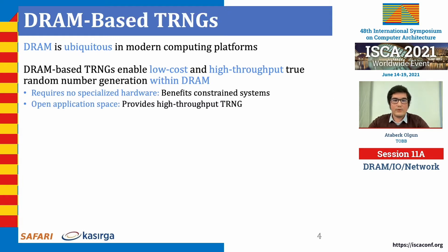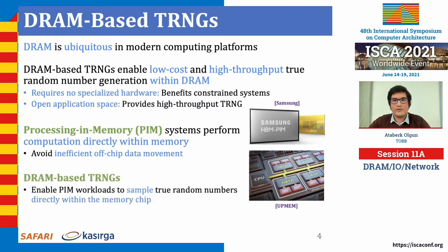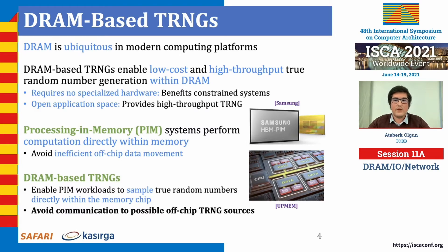These TRNGs open application space in systems that require high-throughput true random number generation. DRAM-based TRNGs are also synergistic with processing-in-memory systems, which perform computation directly within memory and improve system performance by avoiding inefficient off-chip data movement. DRAM-based TRNGs enable PIM workloads to sample true random numbers directly within the memory chip, improving overall security and privacy by avoiding communication to possible off-chip TRNG sources.